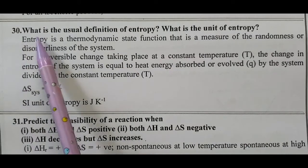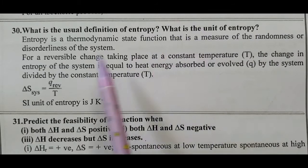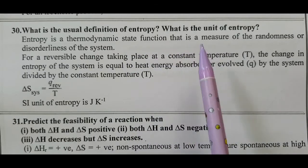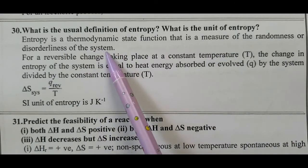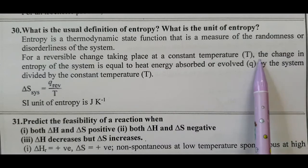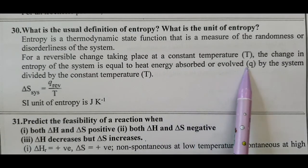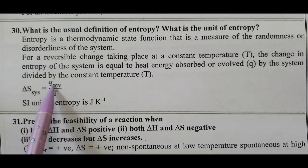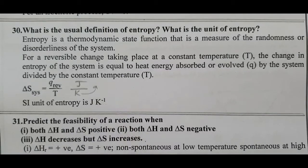Question number 30: What is entropy? Entropy is a thermodynamic state function — not a path function — that is a measure of the randomness or disorderliness of the system. For a reversible change taking place at constant temperature, the change in entropy of the system equals the heat energy absorbed or evolved by the system divided by the constant temperature. The SI unit of entropy, when heat is expressed in joules and temperature in kelvin, is joule kelvin to the power minus one (J·K⁻¹).